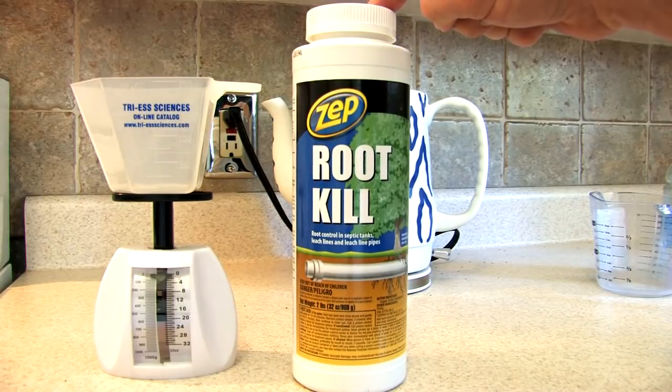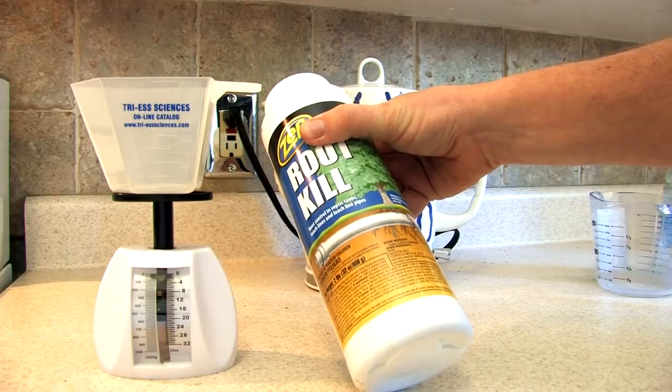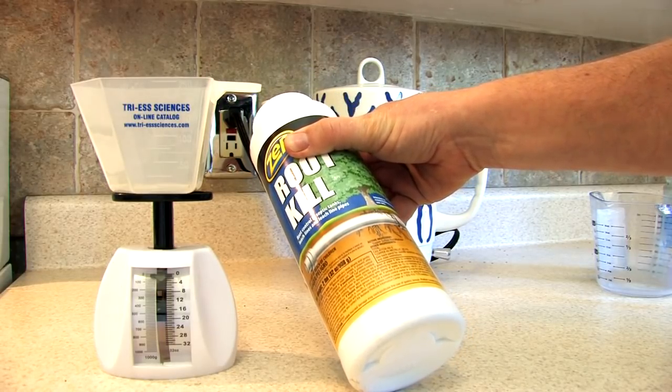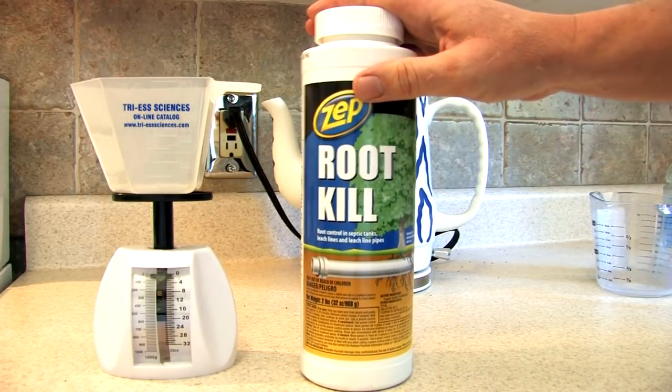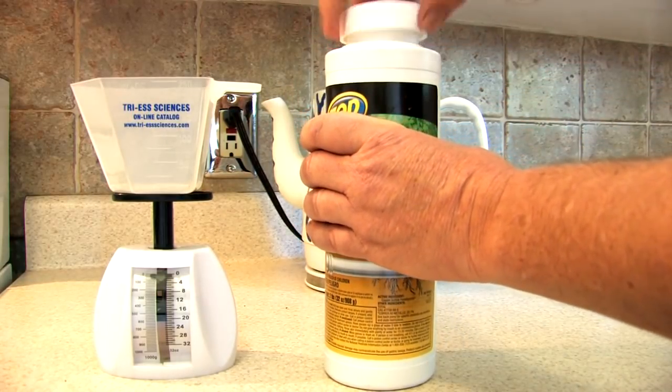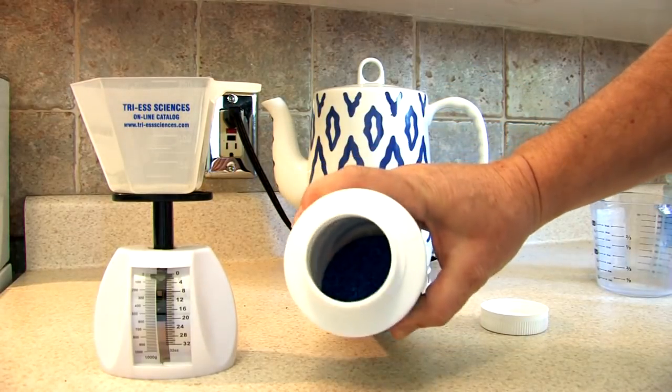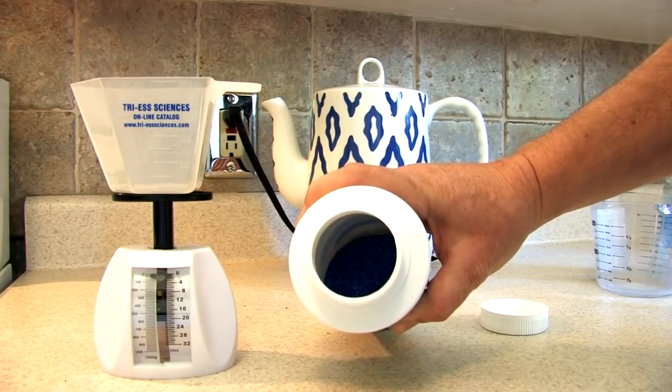And when I looked at the ingredients on Root Kill, it was copper sulfate. Actually technically it's copper sulfate pentahydrate, but it sounded like the same thing I'd been using for copper plating. When I looked at the crystals, I found these perfect blue crystals which looked exactly like what I've been using for copper plating.